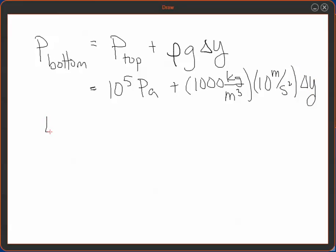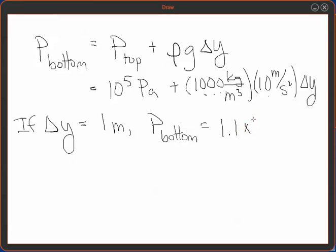So if delta Y is 1 meter, the pressure at the bottom is 10 to the 5, so this is 10 to the 1, 2, 3, 4. So that's about 1.1 times 10 to the 5 pascals.